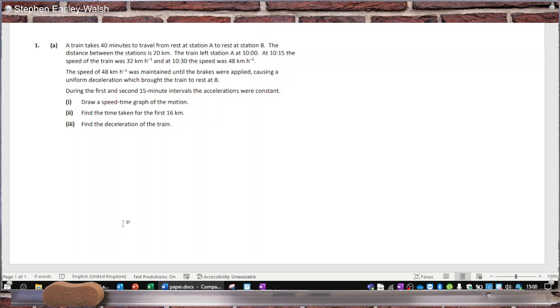Okay, let's have a look at the first question here. A train takes 40 minutes to travel from rest at station A to rest at station B. The distance between the stations is 20 kilometers.